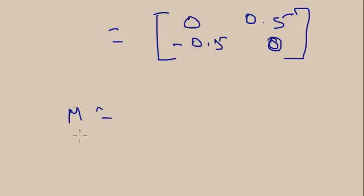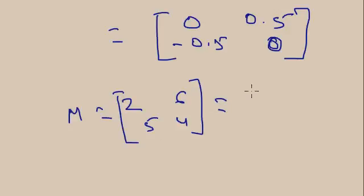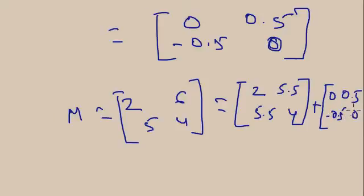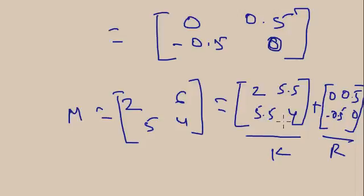So you can express matrix M = [2,5; 6,4] as the sum of K plus R: [2, 5.5; 5.5, 4] plus [0, -0.5; 0.5, 0]. Adding these: 2+0=2, 5.5-0.5=5, 5.5+0.5=6, 4+0=4, giving back M = [2,5; 6,4]. So M equals K plus R, where K is the symmetric matrix and R is the skew-symmetric matrix.